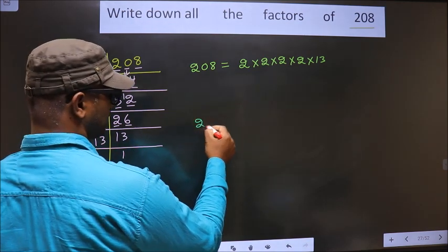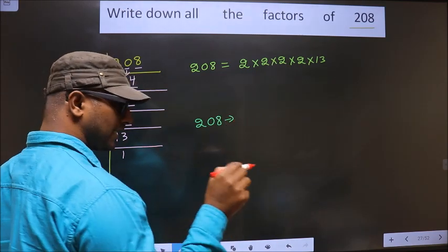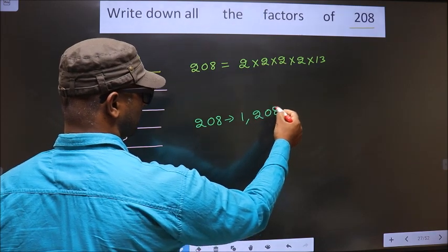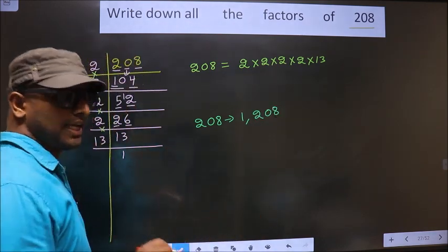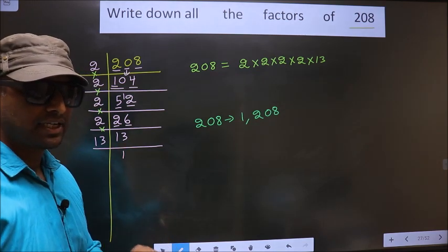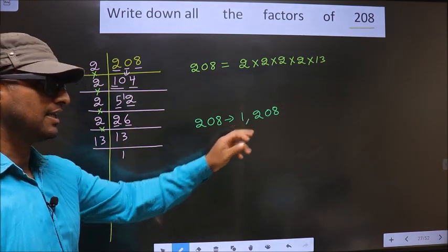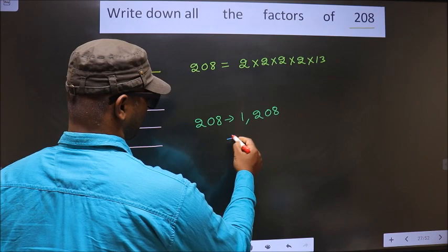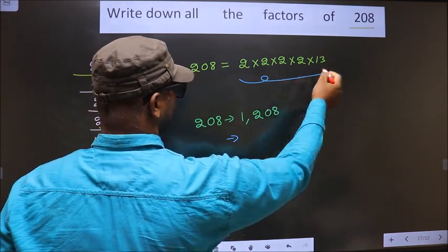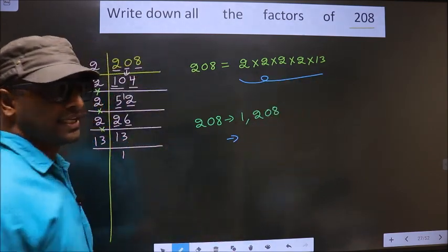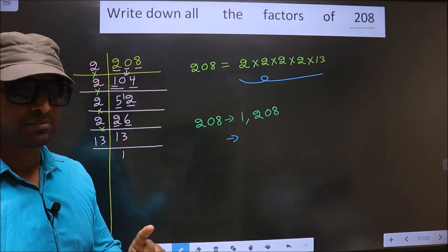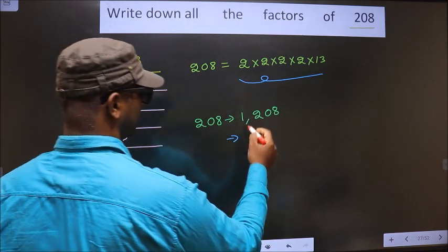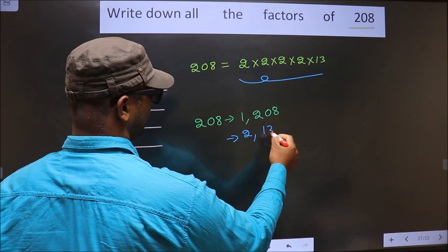Any number you take will definitely include 1 and the number itself in its factors. Now from these numbers, you select 1 different number at a time. How many numbers do we get? We get 2 and 13.